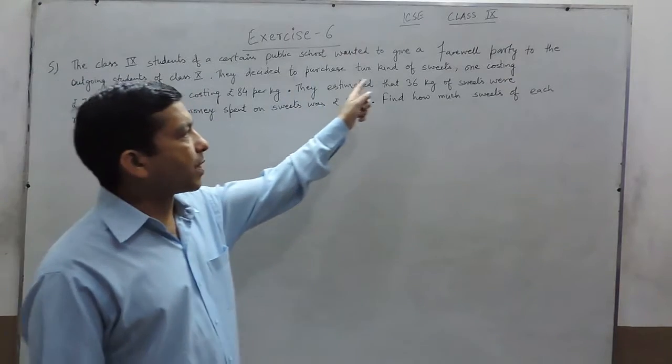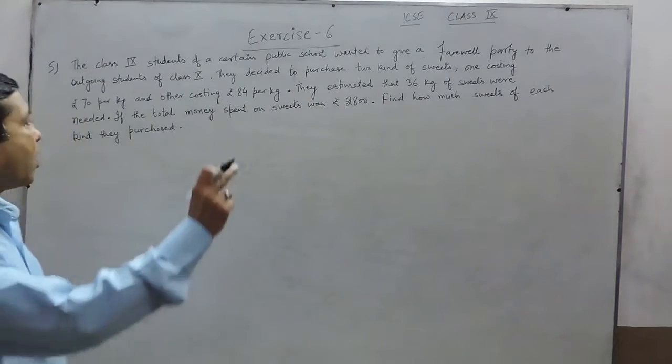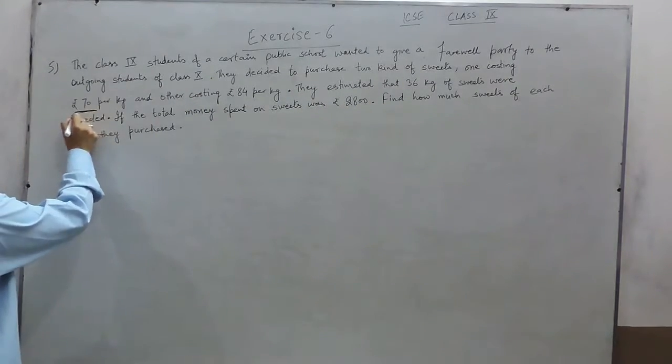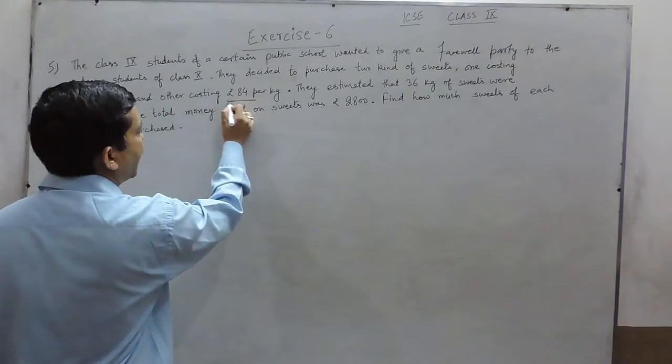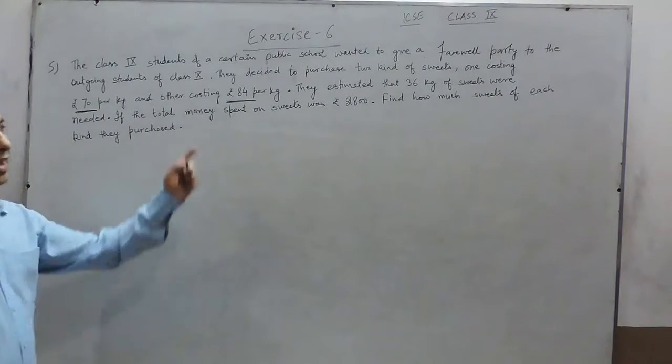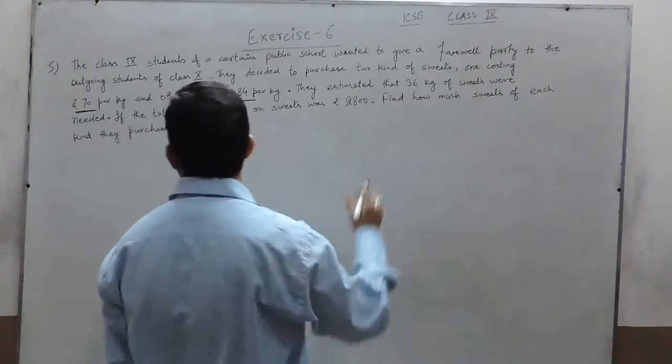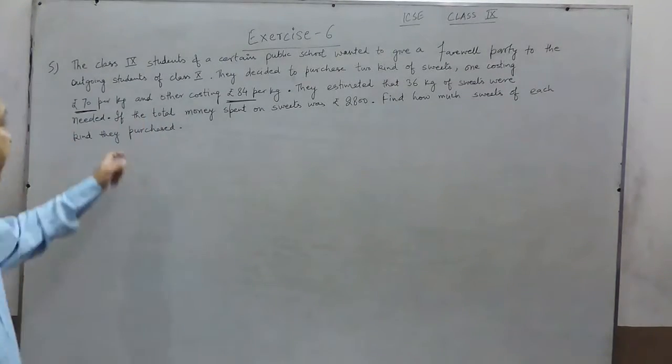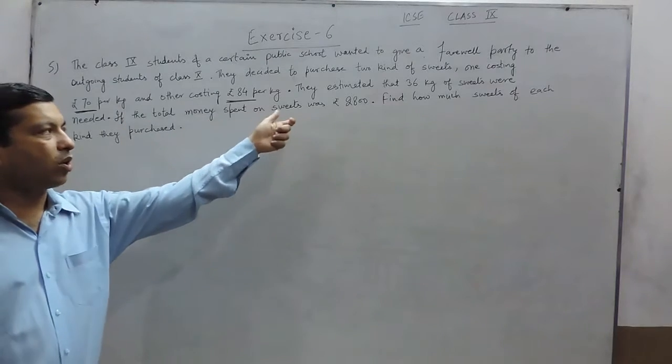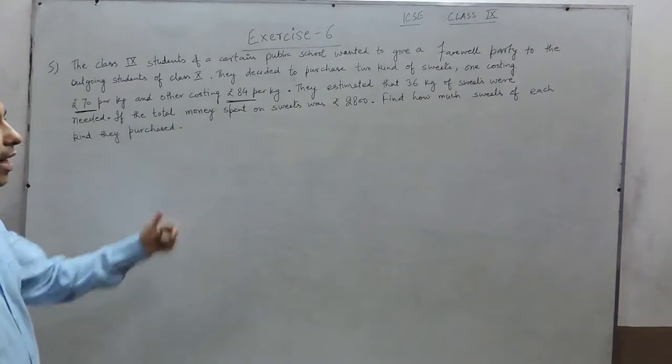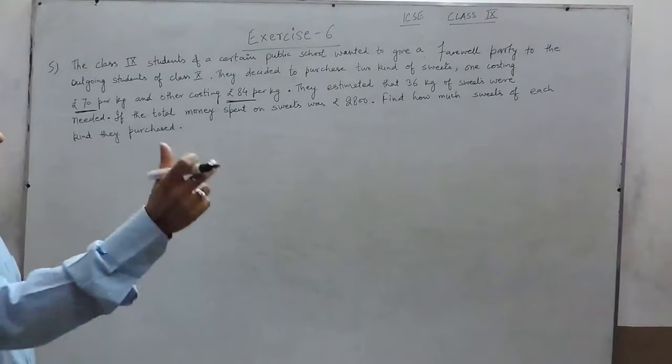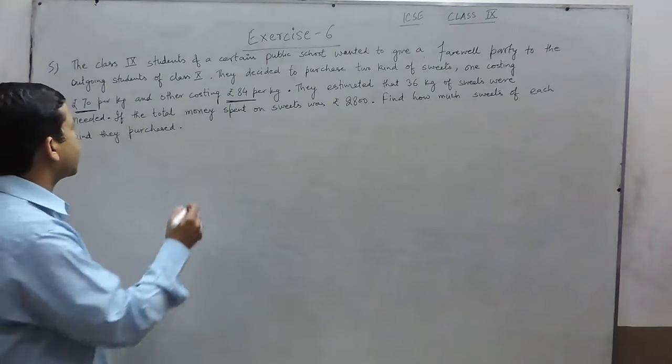They decided to purchase two kinds of sweets. One costing Rs.70 per kg and the other costing Rs.84 per kg. They estimated that 36 kg of sweets were needed. If the total amount of money spent on sweets was Rs.2800, then how much kg is the first kind of sweets and how much kg is the second kind of sweets?